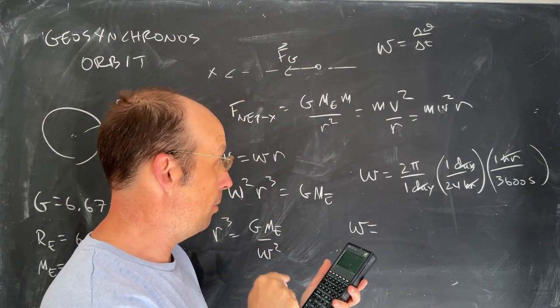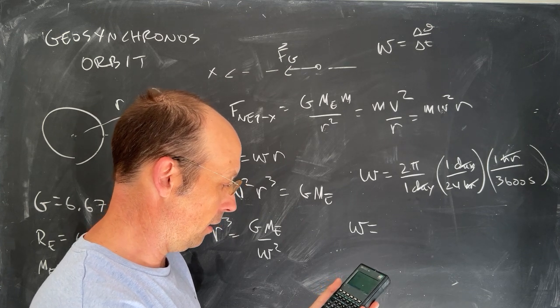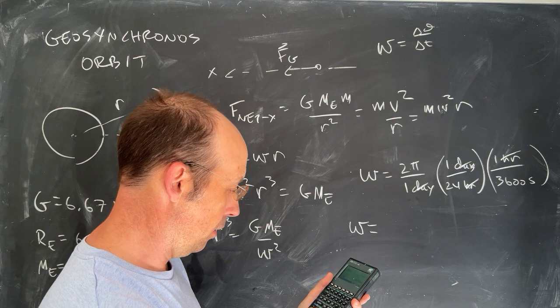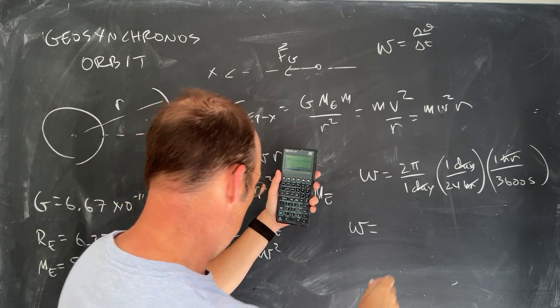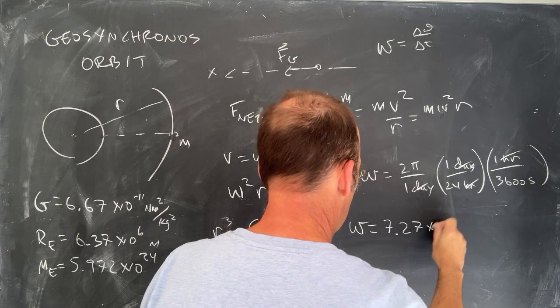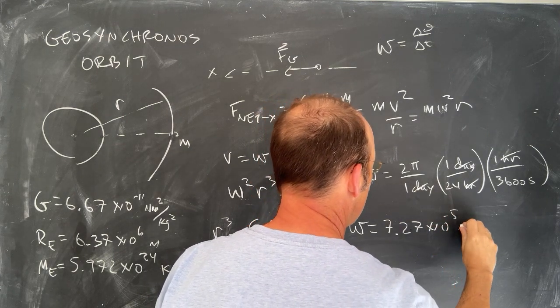Turn on the calculator. 2 pi divided by 24 divided by 3,600, and I get 7.27 times 10 to the negative fifth radians per second.